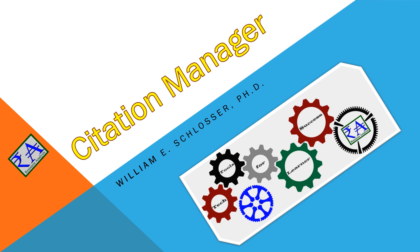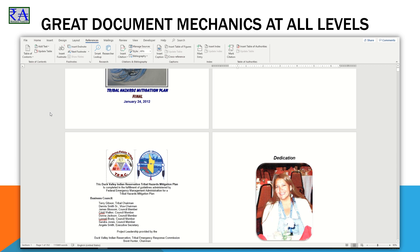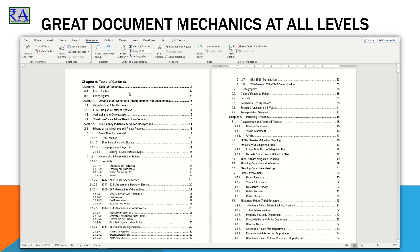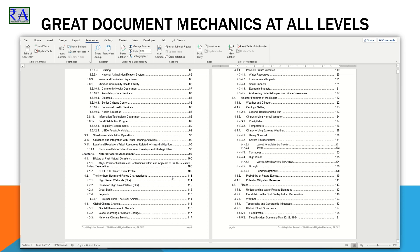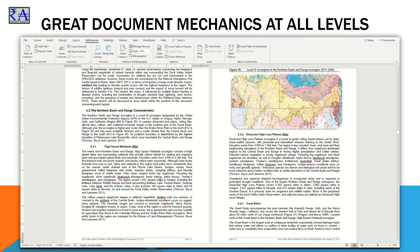Once upon a time, writers would make their citations based on some fundamental assumptions about the style needed for each publication house. Today, there are 2,000 journal publishers and more publishing articles, opinions, and books. These are found in countries around the world, and each has a specific format required for their publications.